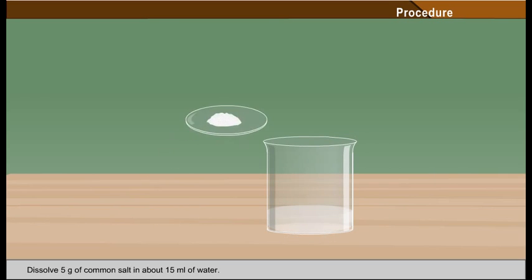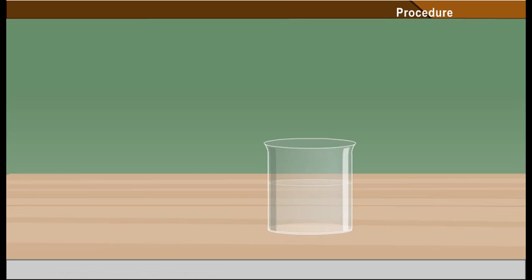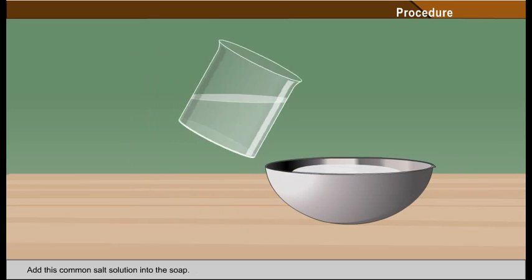Dissolve 5 grams of common salt in about 15 millilitres of water. Add this common salt solution into the soap.